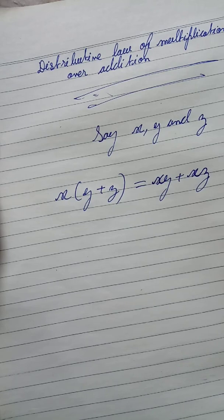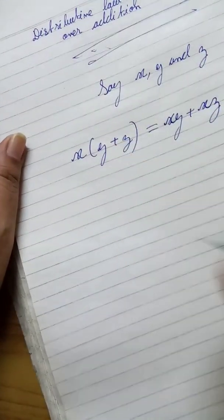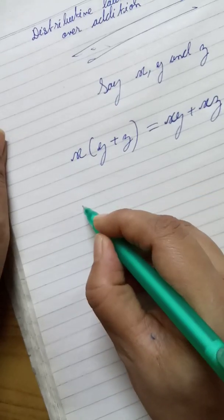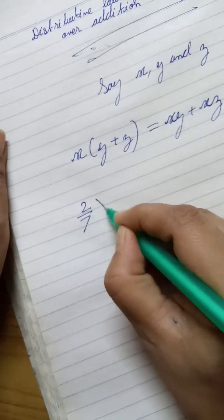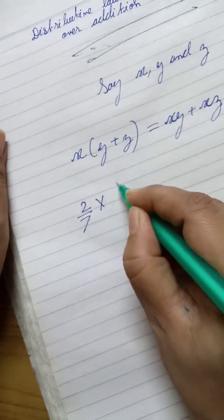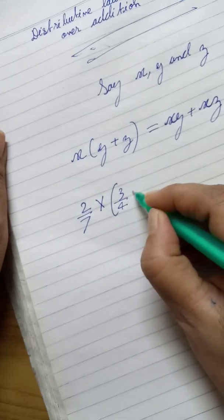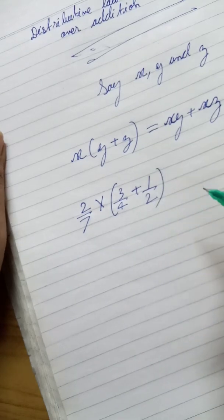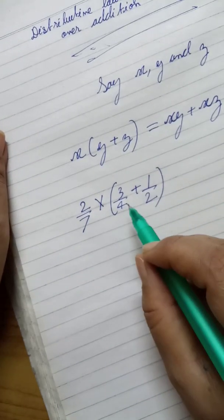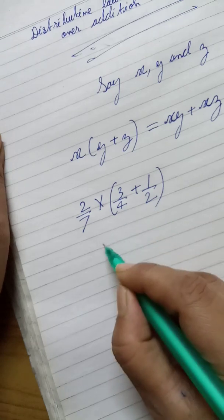Let us understand it with the help of an example. Say we have 2 by 7 multiplied by 3 by 4 plus 1 by 2. Let's do it separately and we will verify the results eventually.